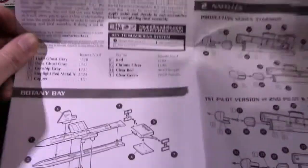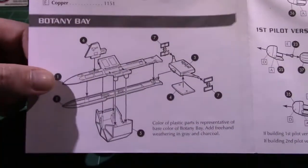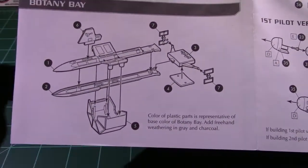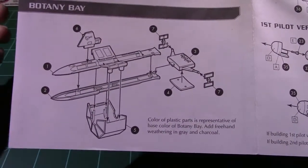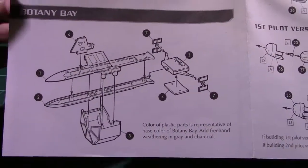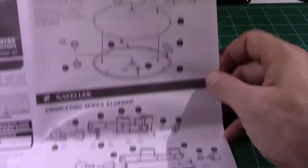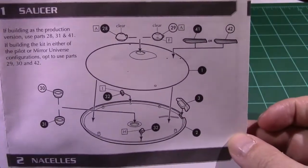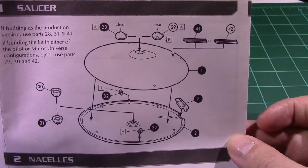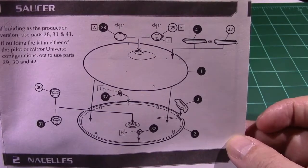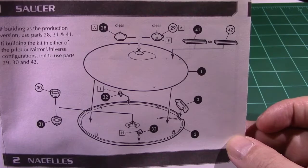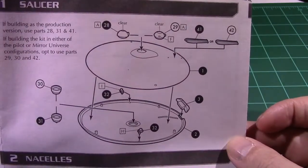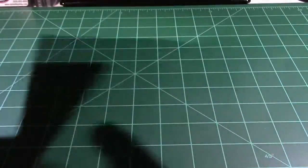Taking a quick look at the instructions here, as you can see, this is the buildup of the Botany Bay. It's only one small section of the instructions because the ship is so small in this kit that it's really simple to put together. Step one calls for the saucer being put together. It gives you two different versions of the saucer: the production series or then the non-production, which would be the pilot episodes, the mirror mirror episode. So it gives you two variations of the saucer to build up.